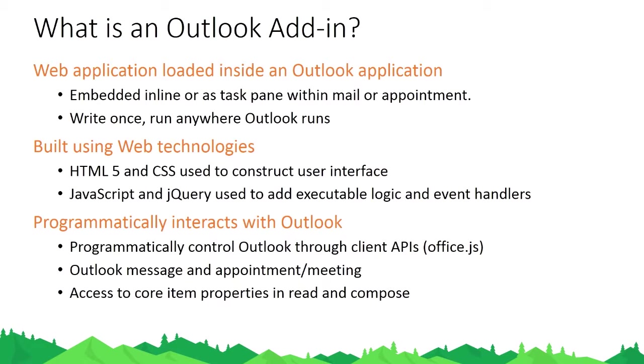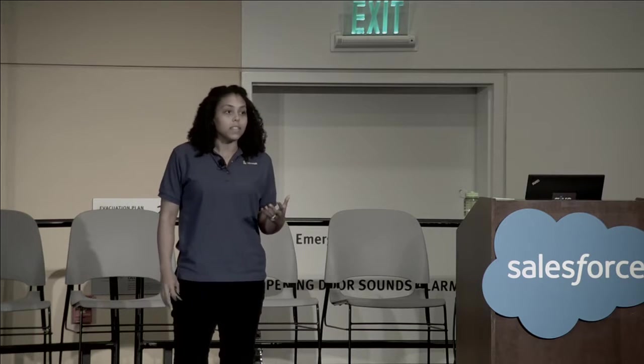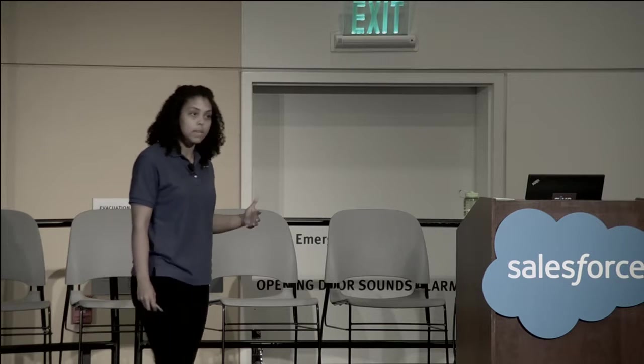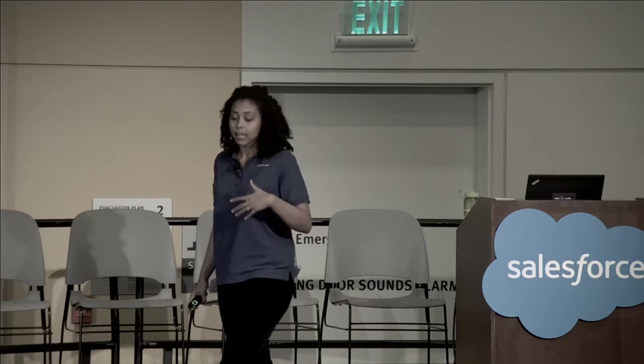We're going to start at the very beginning — what is an Office add-in. Since I'm on the Outlook team, I'll focus on Outlook add-ins. The best way to think about an add-in is as a web page running inside of your application. It could appear in a task pane on the right-hand side, or it may be embedded in the message or appointment you're looking at. To build these add-ins, you just need standard web technologies: HTML5 and CSS for the UI, and JavaScript and jQuery for behavior.